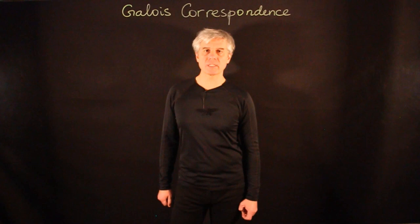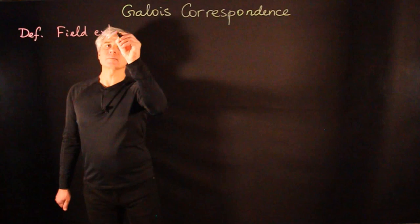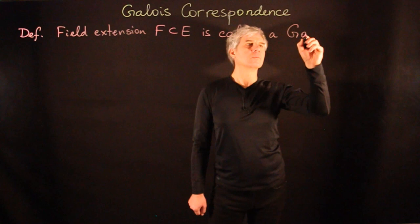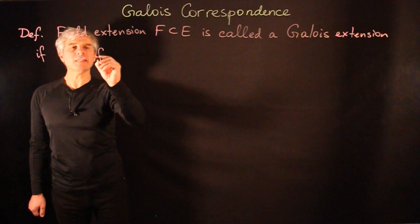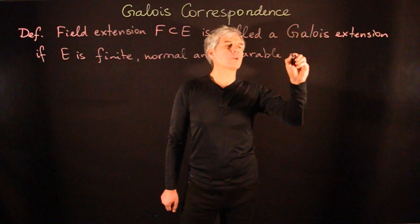In this lecture, we are going to introduce the notion of a Galois group, which is the main object of study in this course. We begin with a definition. A field extension E of the field F is called a Galois extension if E is finite, normal, and separable over F.